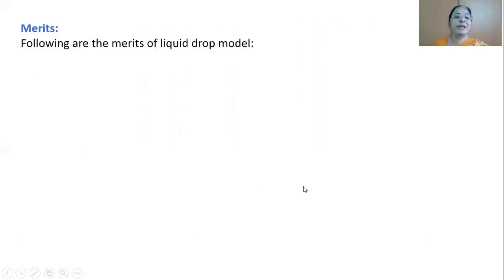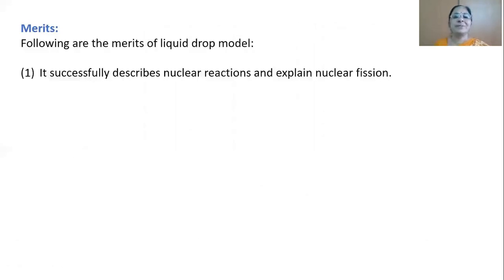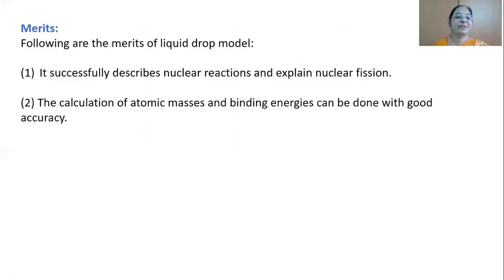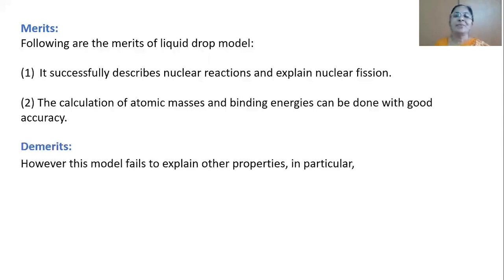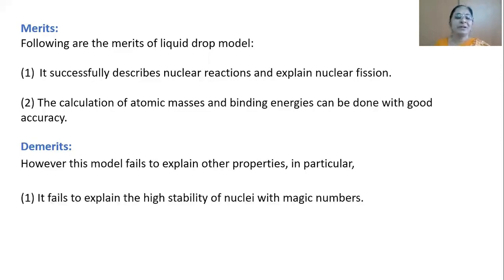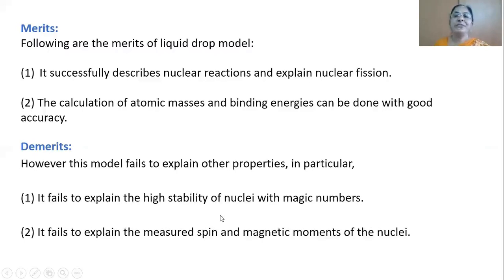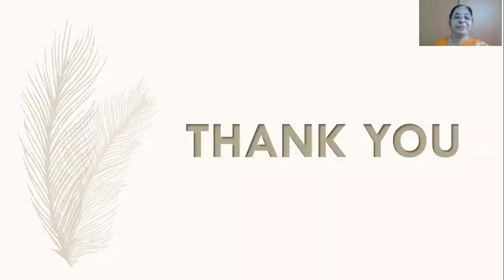Merits of the liquid drop model: it successfully describes nuclear reactions and explains nuclear fission. The calculation of atomic masses and binding energies can be done with good accuracy. However, this model fails to explain other properties — in particular, it fails to explain the high stability of nuclei with magic numbers, and it fails to explain the measured spin and magnetic moments of nuclei. With this I conclude the liquid drop model. Thank you all — I hope you have understood and enjoyed this class.